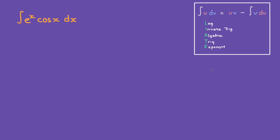Hi everyone, in this video I'm going to show you how to solve the integral e to the power of x cosine of x dx. We're going to use integration by parts, and as you can see, we have e to the power of x, which is the exponent, and then we have the cosine, which is trigonometry.